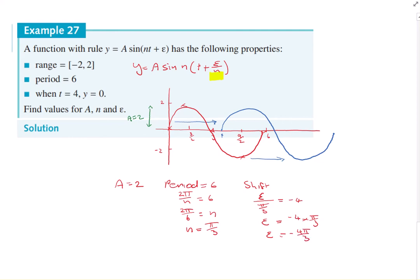Find the values of a, n, and epsilon. So we've got a, find the values of a, n, and epsilon, no b. So a equals 2, n equals pi on 3, and epsilon equals minus 4 pi on 3. And there is no need to write out the equation, because they haven't asked for it.